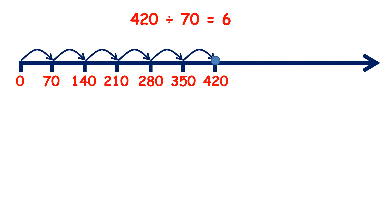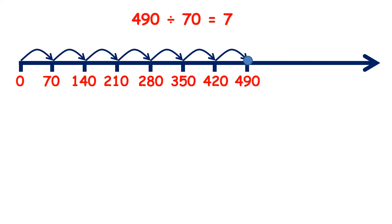420 divided by 70 is 6. 490 divided by 70 is 7. 560 divided by 70 is 8.